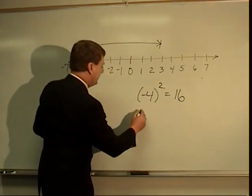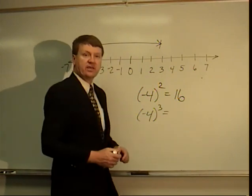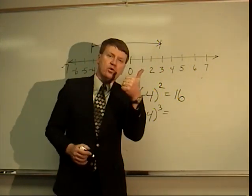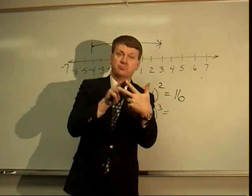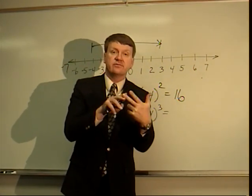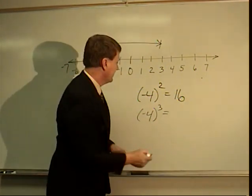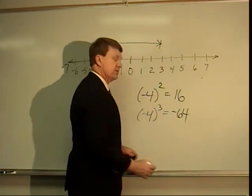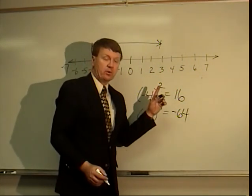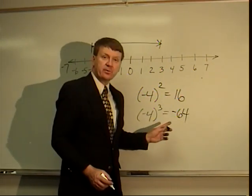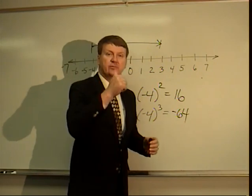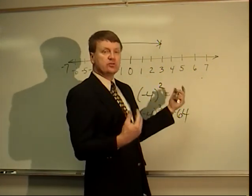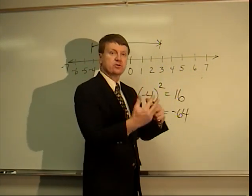What happens if you have negative 4 to the third power? Here's a crazy thing, but it's true. Negative 4, negative 4, negative 4. Two negatives multiplied together, positive. Times another negative, negative. It goes back and forth. Even exponents, even exponents, positive. Odd exponents, negative. Goes back and forth. Why? Because every time you have a negative times a negative, it gives you a positive. It switches it around, goes back and forth.